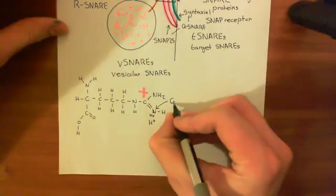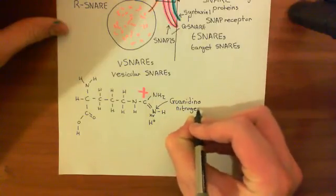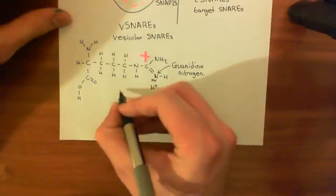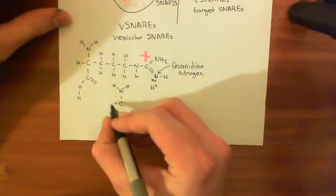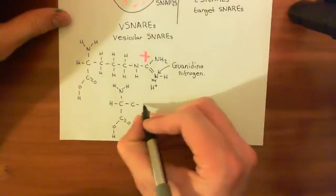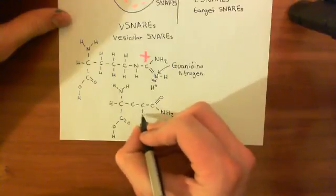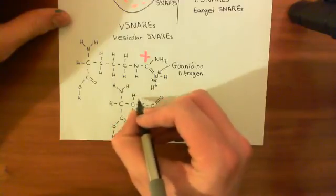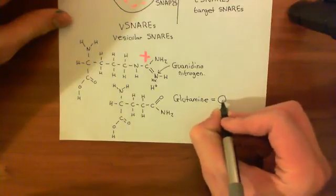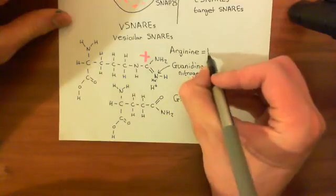That nitrogen has a lone pair of electrons and a funny name — it's known as the guanidino nitrogen. Glutamine, the other amino acid, has the basic amino acid structure plus three carbons ending in a primary amide group — an amino group off the carboxylic acid. This is glutamine, and the single-letter amino acid code for glutamine is Q. The amino acid discussed above was arginine, and the single-letter code for arginine is R.